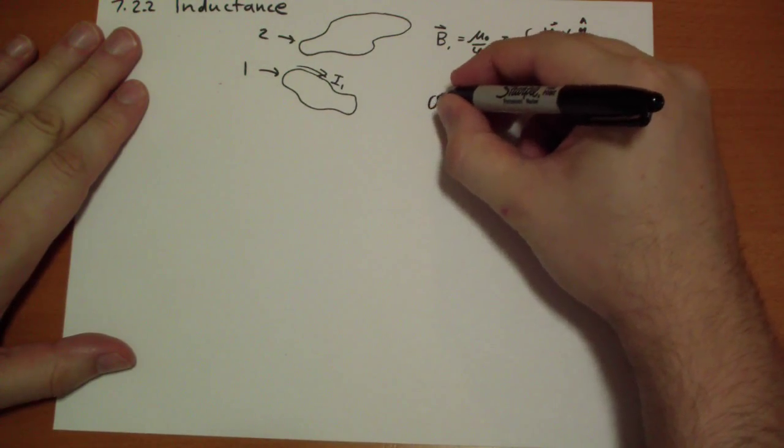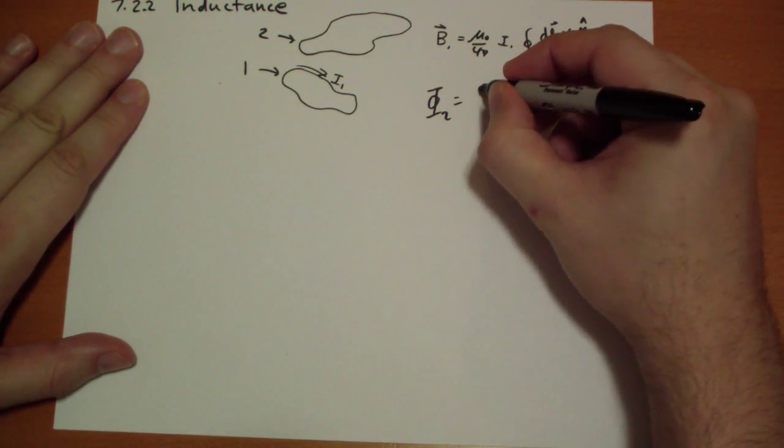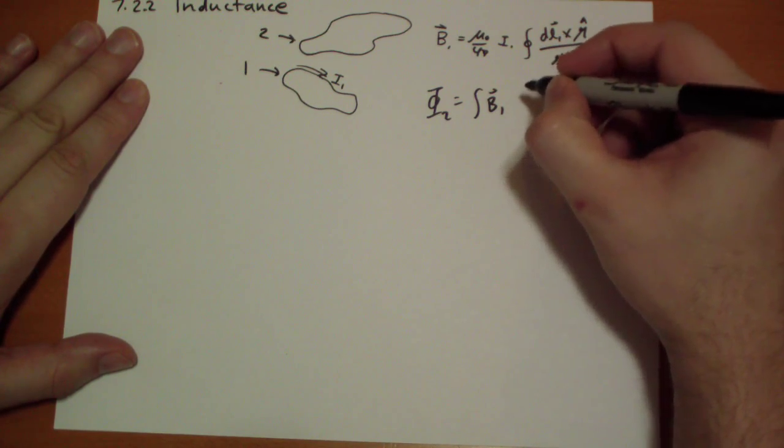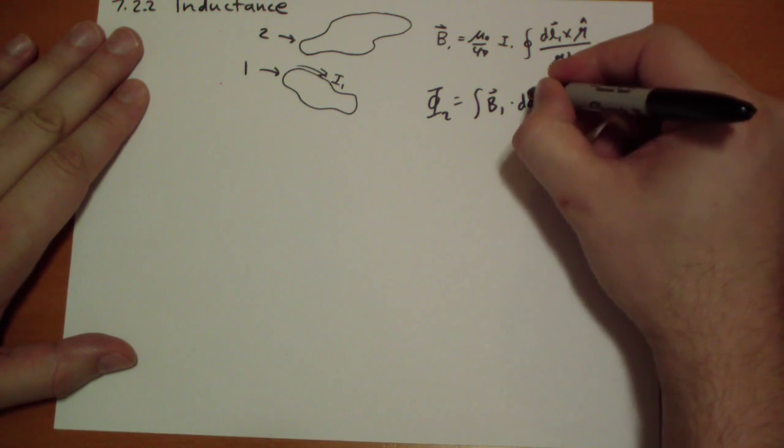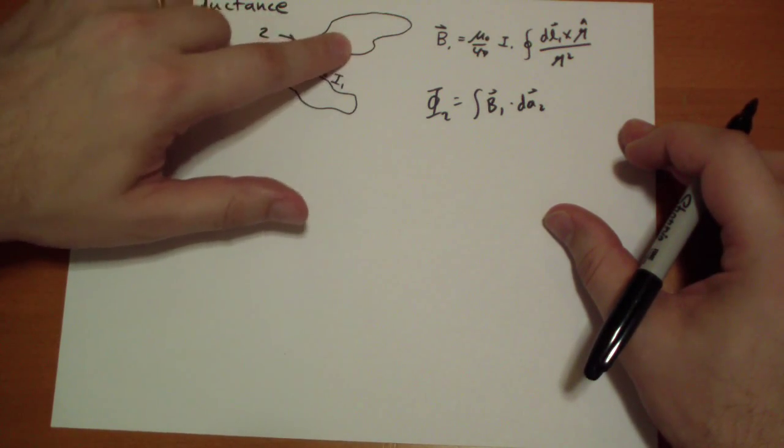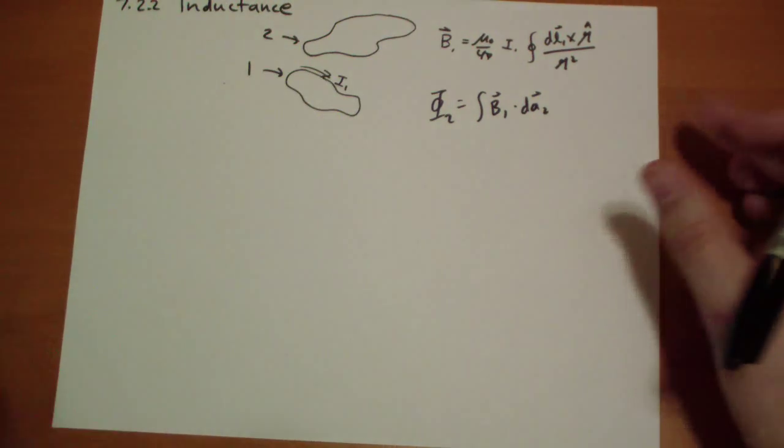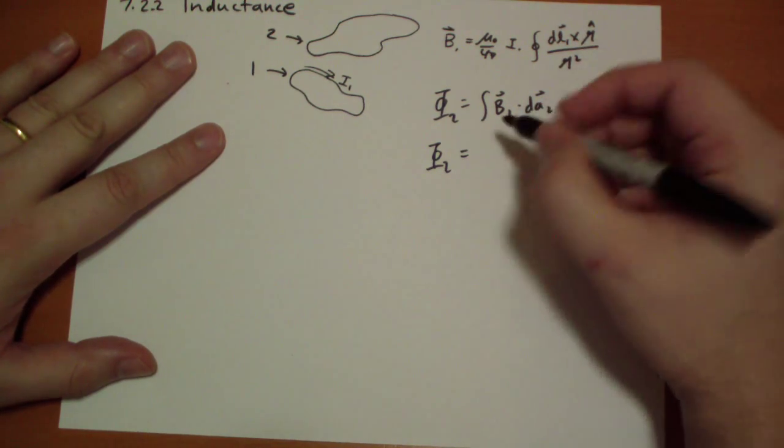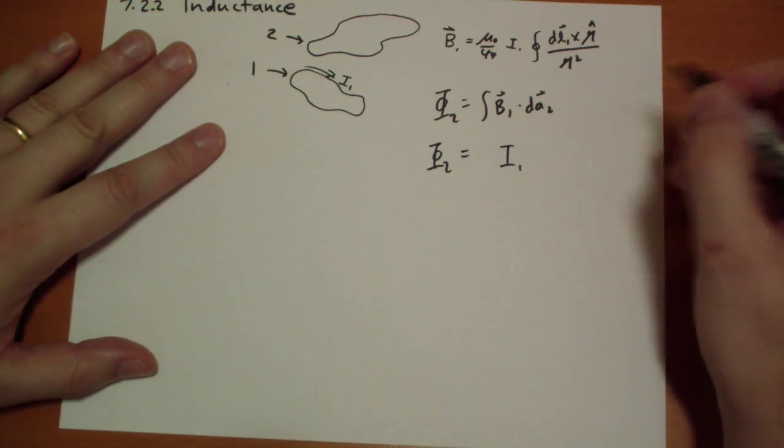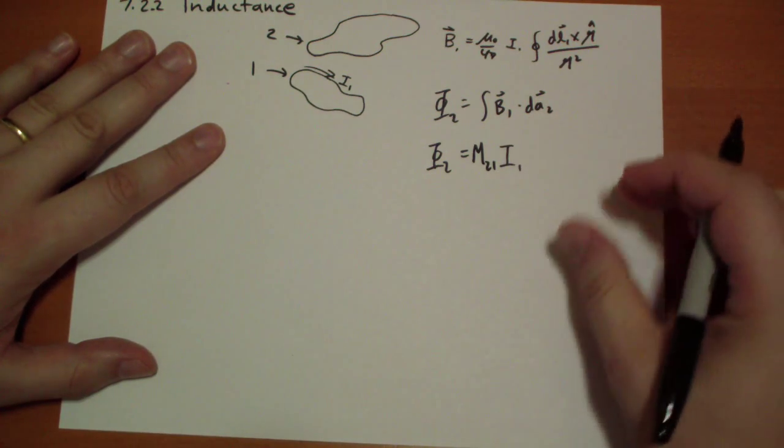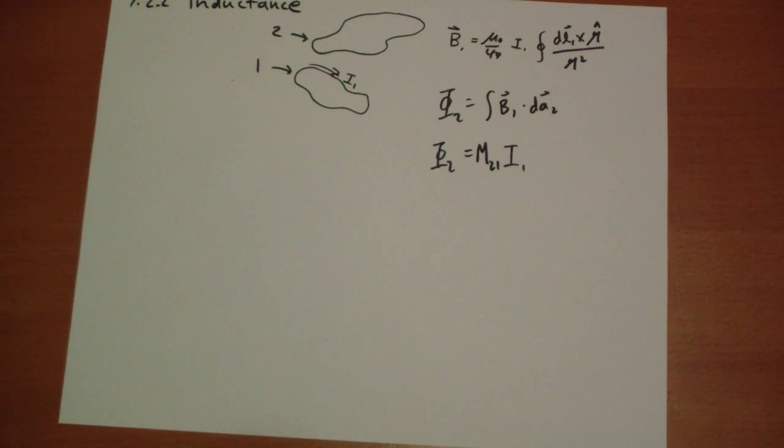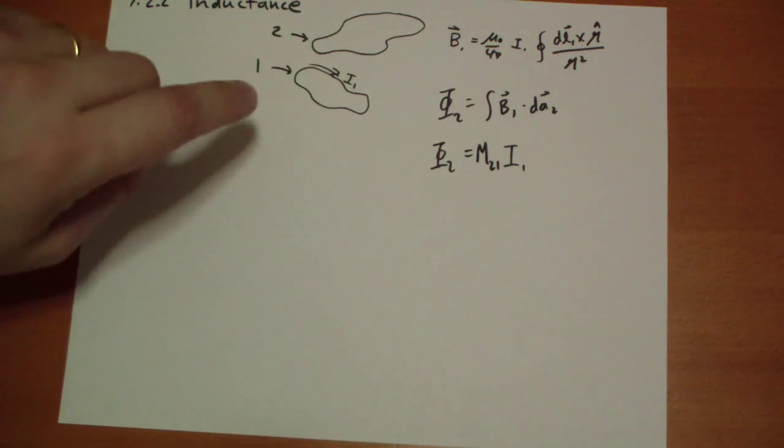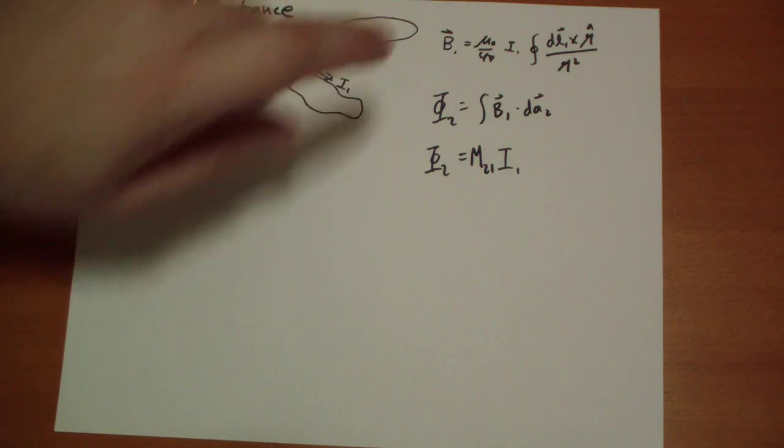So the flux through loop 2, that's going to be the magnetic field due to the first, dot the area vector through 2. We're going to do a surface integral over this area here, and dot each of the little area components of the magnetic field generated by 1. We end up that the flux through 2 is equal to something times the current through 1, and I'm going to call this one M21. This is the mutual inductance of the two loops. More specifically, this is the inductance you get if you put a current through 1, and it'll tell you what the flux through 2 is.